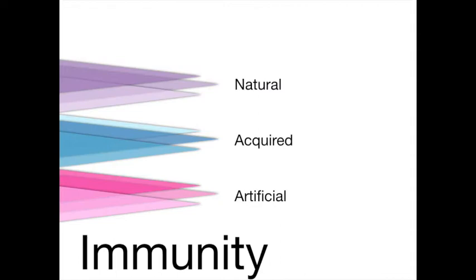Immunity is the state of being resistant or not susceptible to a specific disease. Natural immunity is passed from mother to fetus before birth, and additional immunity is passed through breast milk after birth. Acquired immunity is obtained by development of antibodies during an attack of an infectious disease — for example, after having chickenpox, antibodies are present against it. Artificial immunity, also known as immunization, is immunity acquired through vaccination. Examples of currently available vaccines include chickenpox, diphtheria, hepatitis B, influenza, measles, meningitis, mumps, pertussis, pneumonia, poliomyelitis, smallpox, tetanus, and typhoid.